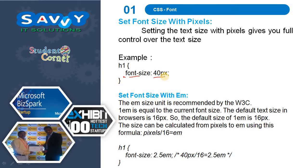Instead of using pixels, we can use em. The em size unit is recommended by the W3C. 1em is equivalent to the current font size. The default text size in browsers is 16px, so the default size of 1em is 16px. The size can be calculated from pixels to em using this formula: pixels divided by 16 equals em. For example, font-size: 2.5em is equal to 40px divided by 16, which is 2.5 — equivalent to 40px.